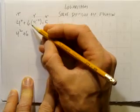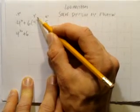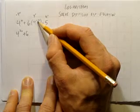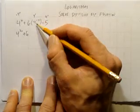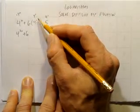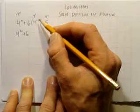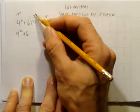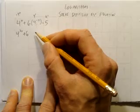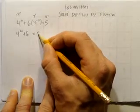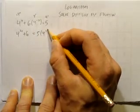Over here, 6 still stays there. 4 to the negative x times 4 to the x. Add the exponents. Multiplying the same base, add the exponents. Negative x plus x just makes 0. And 4 to the power of 0 is just 1. These cancel each other out. And you get equals 5 times 4 to the power of x. That's the first trick.